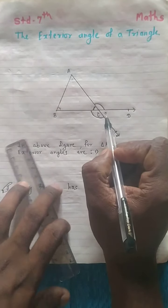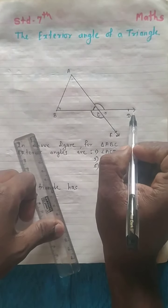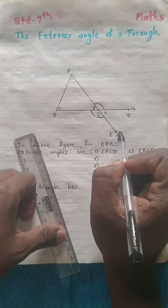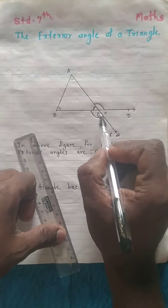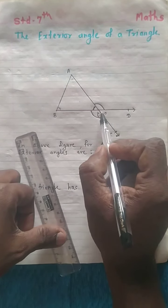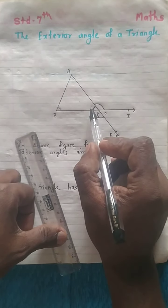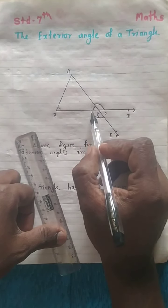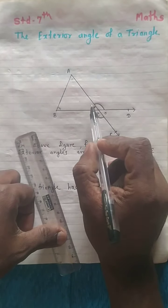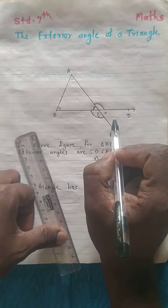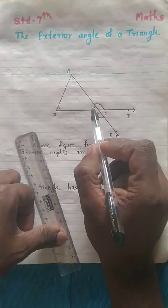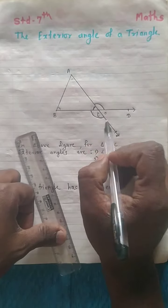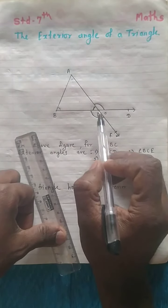Here there is also the angle DCE, but this is the same angle as the interior angle. Since it is formed by a linear pair with the internal angle, angle DCE cannot form an exterior angle.